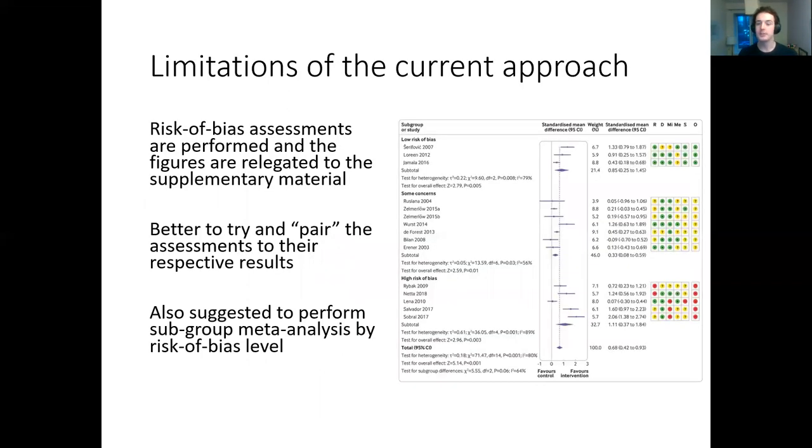However, there are some limitations to this current approach of producing separate risk of bias plots. Risk of bias assessments are regularly performed - we know this because authors state in the methods that they've done this - but they either don't produce figures or if they do they're relegated to the supplementary material. This means that readers of these papers really have to dig to find this often quite important information.